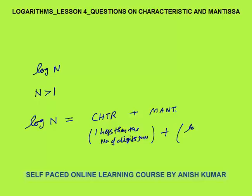Mantissa you have to see from the log table. Mantissa value is always positive — it lies between 0 and 1. It will be more than 0 and less than 1. Whatever the value of n, mantissa will always lie between 0 and 1.